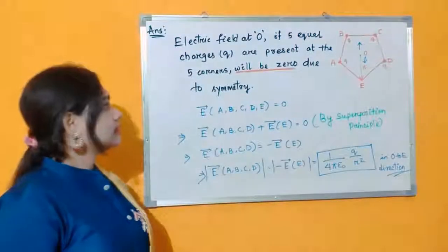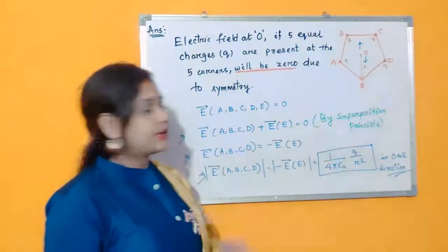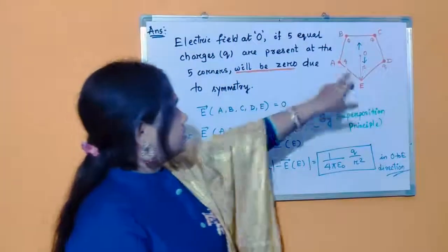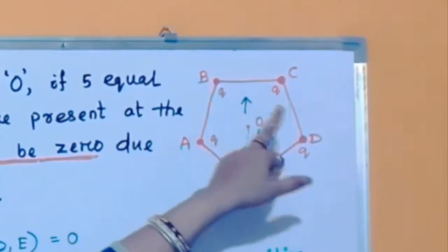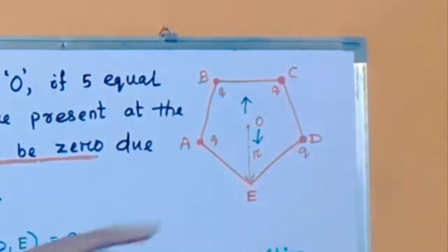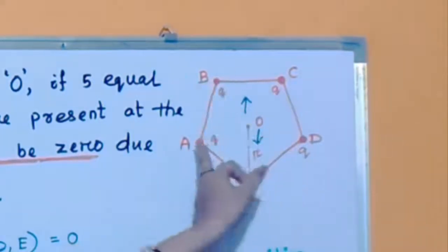So let's get into the answer. This is the pentagon. According to the question, four equal charges are placed at A, B, C, D. And the question is asking about the electric field at O due to these four charges A, B, C, D.